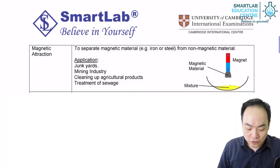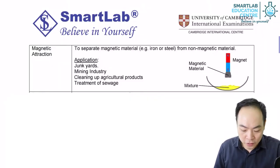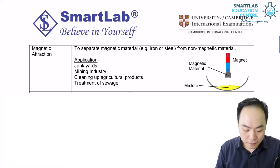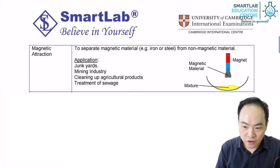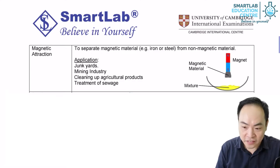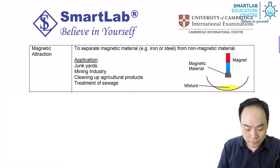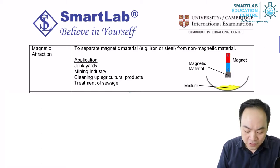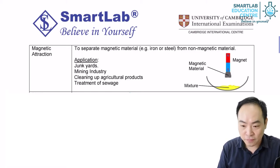In magnetic attraction, we use a magnet to separate magnetic materials from non-magnetic materials in a mixture. A magnet is a material that can pull certain types of metal toward itself.